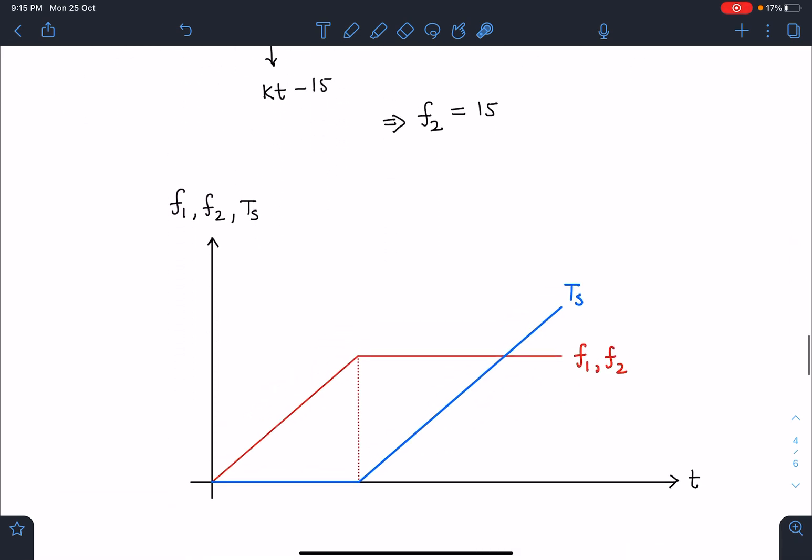So now we can plot the graph, it's very easy. F1 and F2 graphs will be identical, this is kt and this is the moment of 15/k. Beyond that, both the friction values will become constant and will be having the value of 15 Newton.